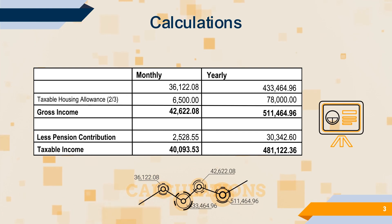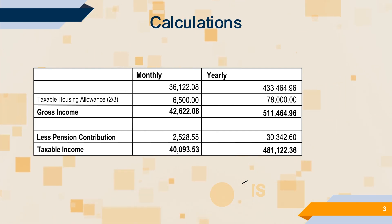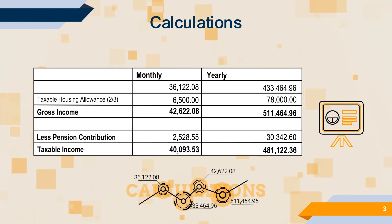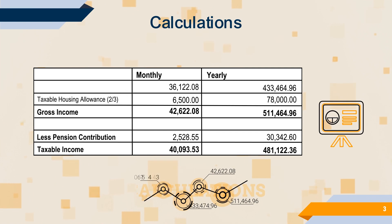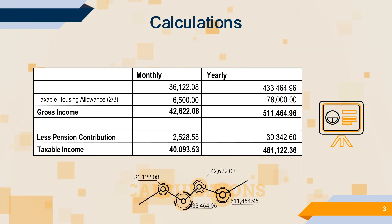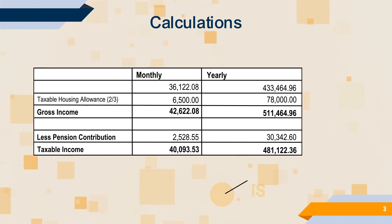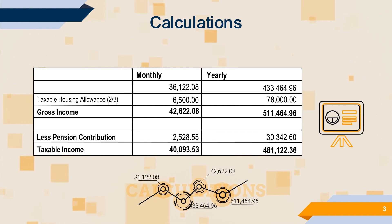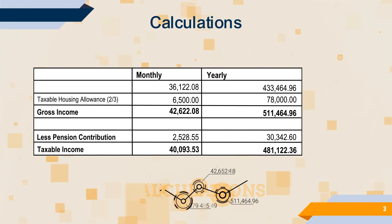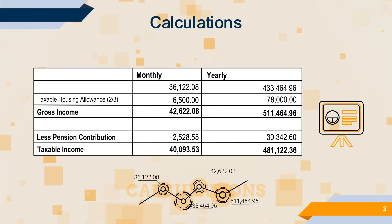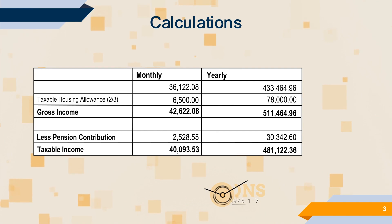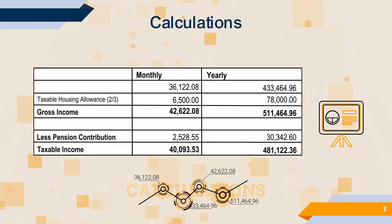Your gross income will be your basic salary plus your allowance — $36,122.08 plus $6,500, which amounts to $42,622.08. To get your taxable income, you take your gross income less your allowable deductions, in this case your pension contribution of $2,528.55, giving you a taxable income of $40,093.53 per month.